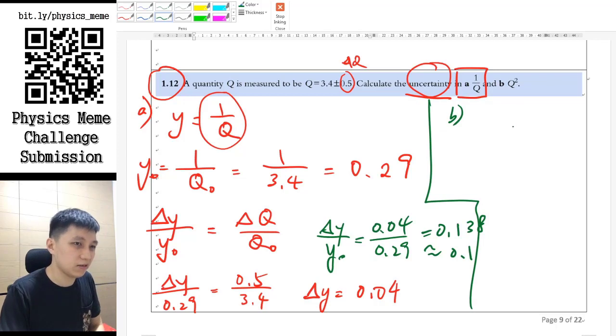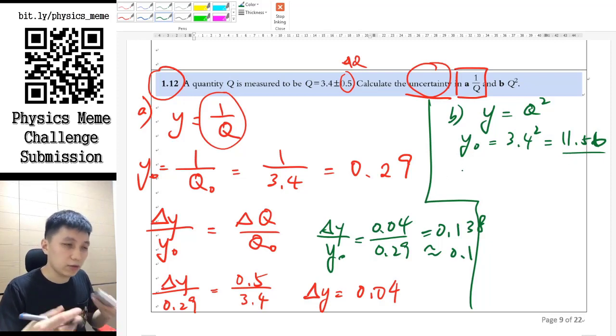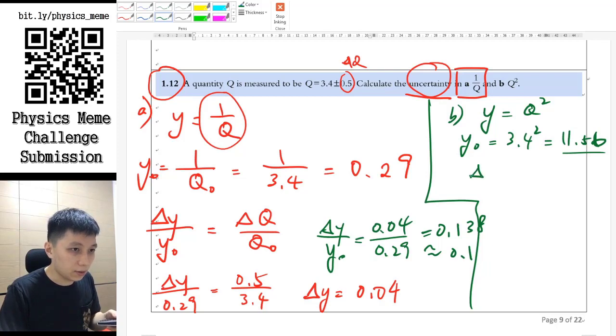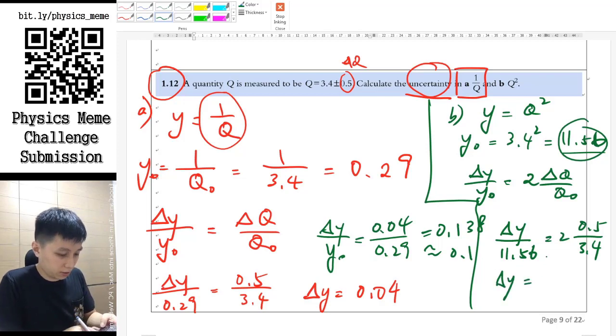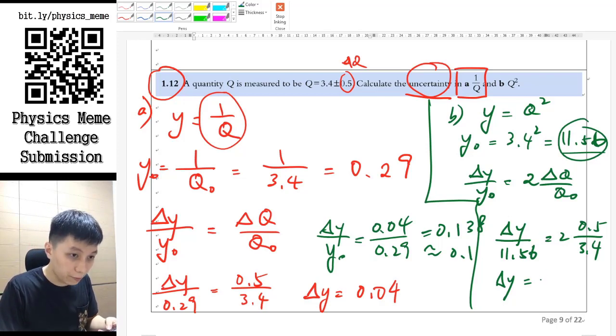As for part B, it would be the same. So y equals q square, so y log equals 3.4 square, so 3.4 square is 11.56. You can actually keep the whole number if you want to, and then only round up when you reach the final answer. Delta y over y log equals to, here would be 2 of q, so delta q over q log, so we would have delta y over 11.56 from here equals to 2.